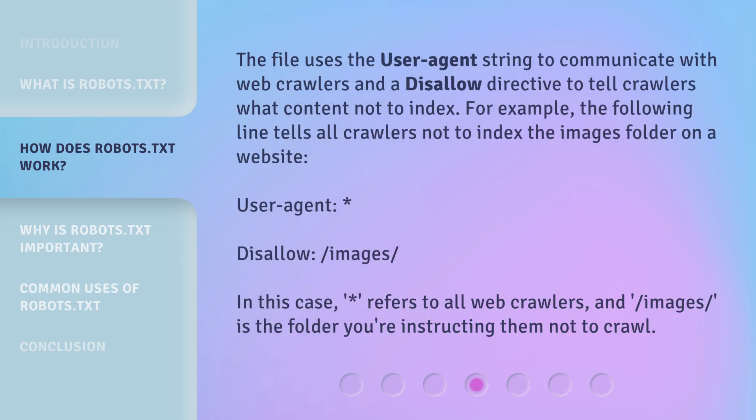The file uses the user-agent string to communicate with web crawlers, and a disallow directive to tell crawlers what content not to index. For example, the following lines tell all crawlers not to index the images folder on a website: 'User-agent: *' and 'Disallow: /images'. In this case, the asterisk refers to all web crawlers, and /images is the folder you're instructing them not to crawl.